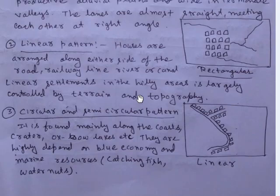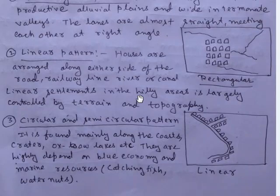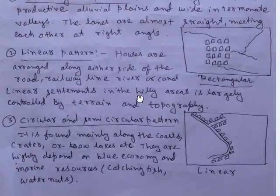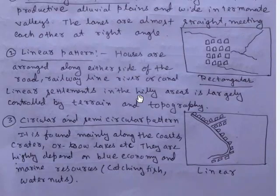The circular and semicircular pattern is found mainly along the coast, craters, oxbow lakes, etc. These settlements are highly dependent on the blue economy and marine resources such as catching fish and water nuts.